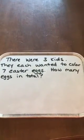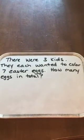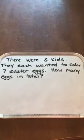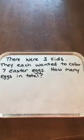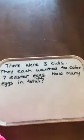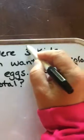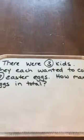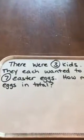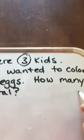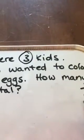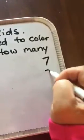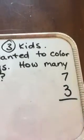And it read like this: there were three kids, they each wanted to color seven Easter eggs — how many eggs in total? The first thing I want to do when I get a story problem is circle the numbers in the problem. I know that there are three kids and they each want seven eggs, so I'm going to do something with the numbers seven and three — just not sure what yet.